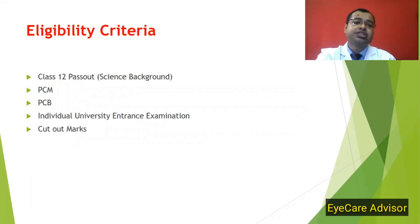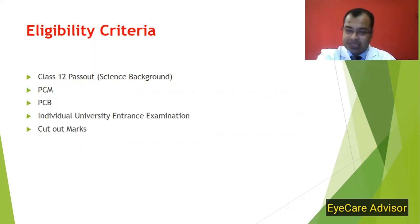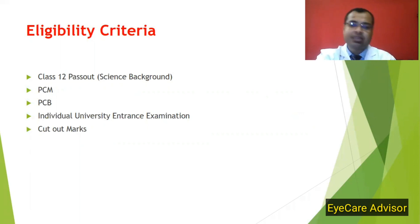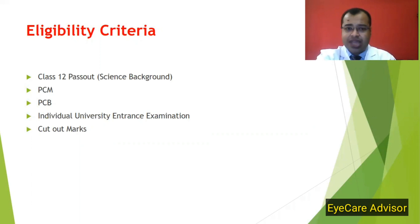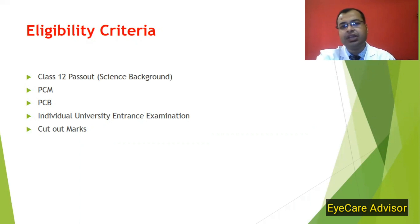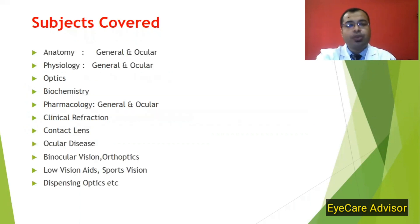For those interested in studying optometry, what is the eligibility criteria? You have to be a 12th pass-out with a science background — either Physics, Chemistry, Maths or Physics, Chemistry, Biology. Every university has some cutoff marks and they also conduct individual entrance examinations. Based on those, you can take admission in optometry.